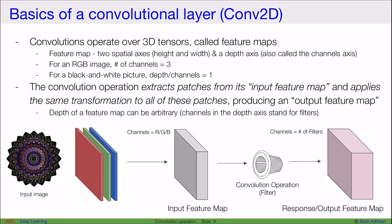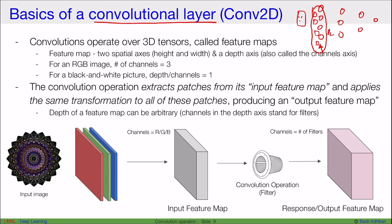Now let's look at the basics of a convolutional layer. Just like feed-forward networks have neurons in each layer, a convolutional layer has a bunch of convolutional neurons — one, another, another, and so on — in the first layer L1, and another set of convolutional neurons in the second layer L2, and so on.